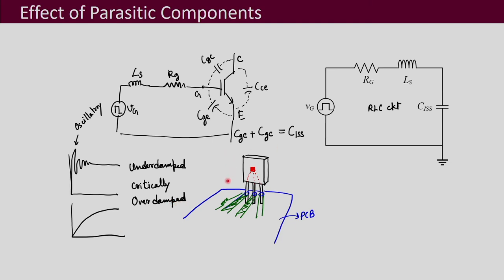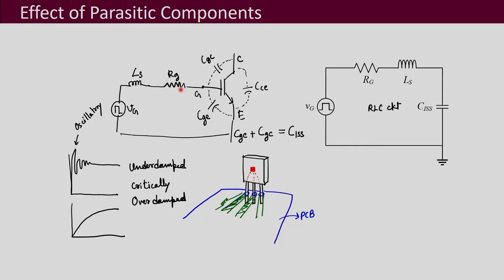We have to be careful that this oscillatory response is not damaging the gate region. First, the spikes should not be very high. Second, the oscillations should not distort the power electronic circuit operation or the turn-on and turn-off waveforms. What you have in your hand is control of the RG. The LS and CISS are not controllable, but RG is something you can change to balance the oscillatory response without making turn-on and turn-off too slow.